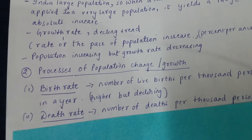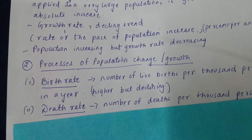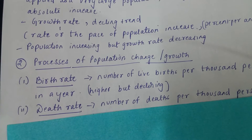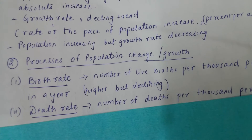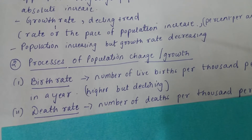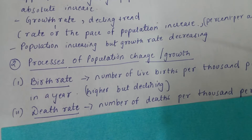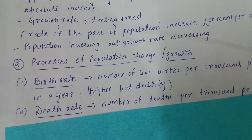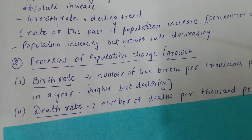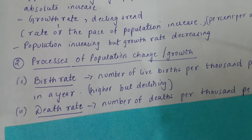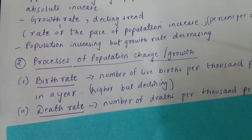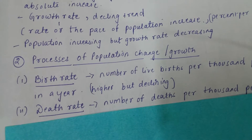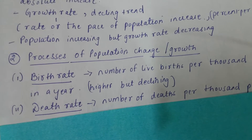Now, what are the processes of population change or growth? From common sense, birth and death definitely add to the dynamism of a population. For example, if a brother is born in your family of four, you become five — population increased. If your family has six members and your grandfather dies, you immediately become five. So birth and death play a very important role in population change.